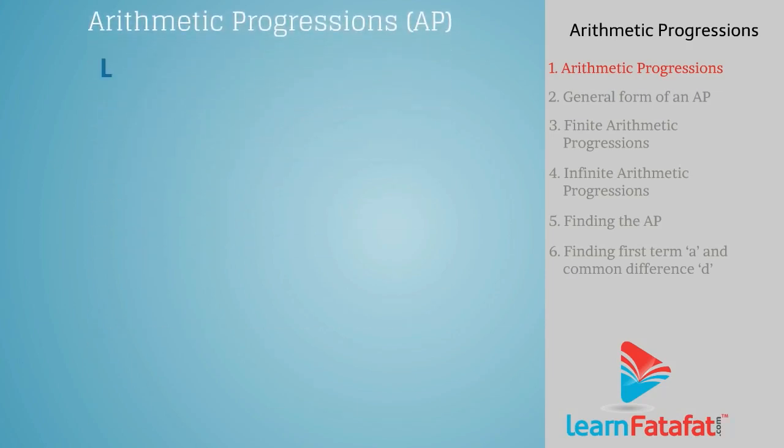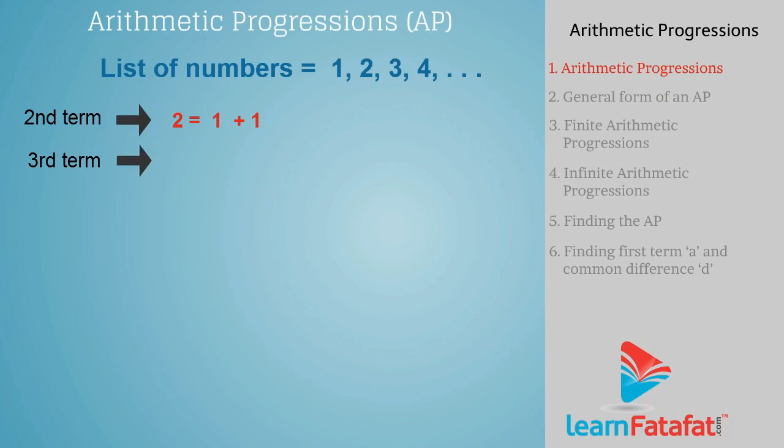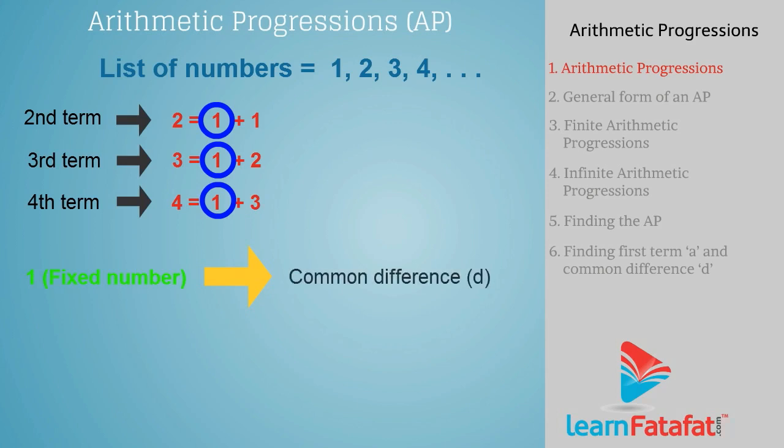Arithmetic progressions. A list of numbers in which each term is obtained by adding a fixed number to the preceding term, except the first term, is called an arithmetic progression. In this example, one is called the common difference of the AP, which can be positive, negative, or zero.